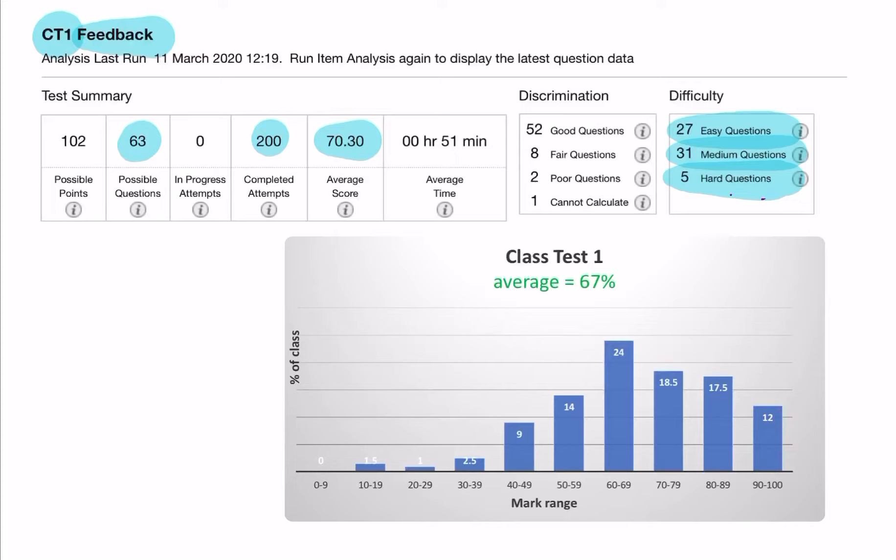In terms of how good the questions were, according to VITAL, 52 of the 63 were good questions. Three were poor questions, and these poor questions means that they're questions that everyone got correct, everyone answered correctly.